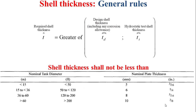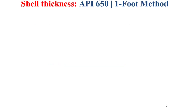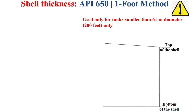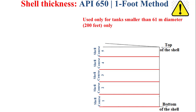Even if the calculated shell thickness is lower than these minimum values, we have to take those values as the minimum shell thickness. The one-foot method is used only for tanks smaller than 61 meters in diameter. Also, the shell thickness is not constant from bottom to top since the pressure is not constant, so we have to subdivide the shell into several shell courses and calculate the appropriate thickness for each.